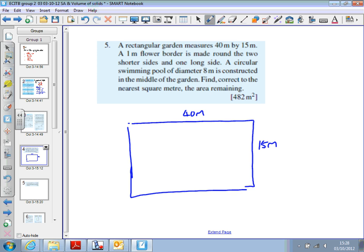And I know a one meter flower bed is made around the two shorter sides and along one side. So, in other words, it looks like this. Where that's one meter. And that's one meter. So, we've got one meter flower bed.